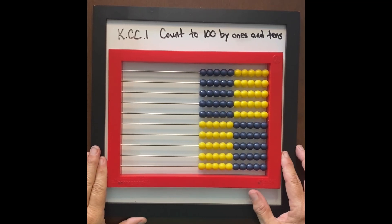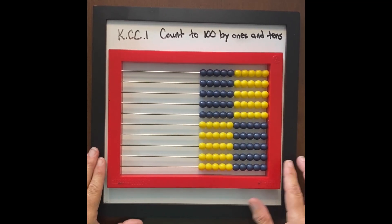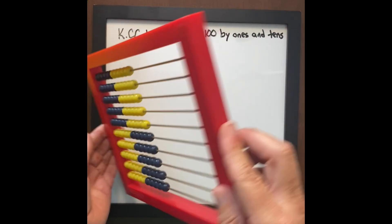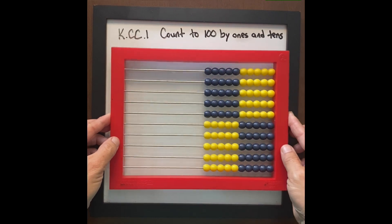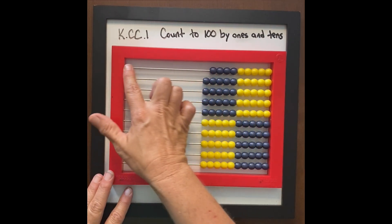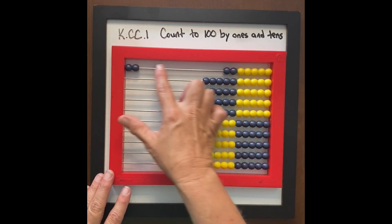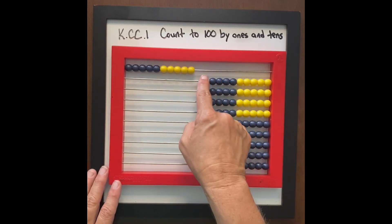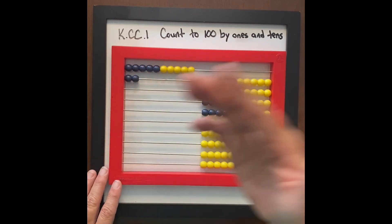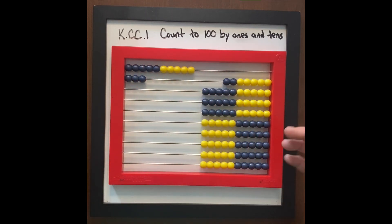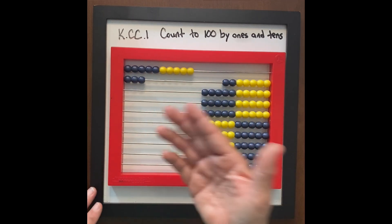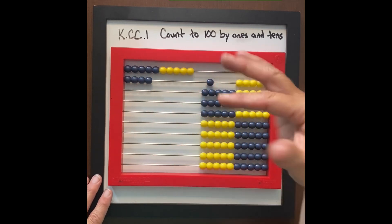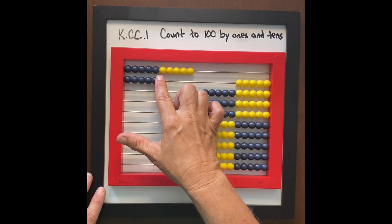Let's take this abacus activity for counting to 100 by ones and tens a little step further. So we talked about when students come to the carpet, I make that noise and we count all together — we count by ones until we get to 10, and then we say 1 ten, 2 tens, 3 tens, and so forth. Now let's take it up to the next level that students are ready for.